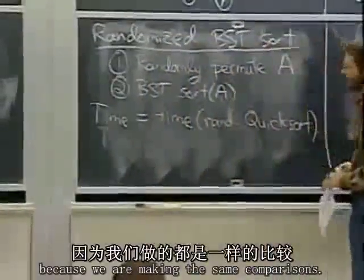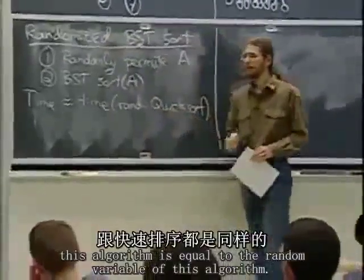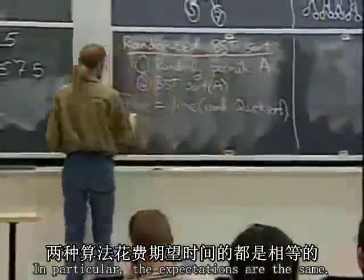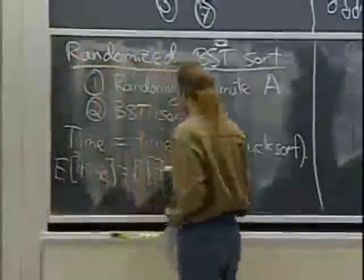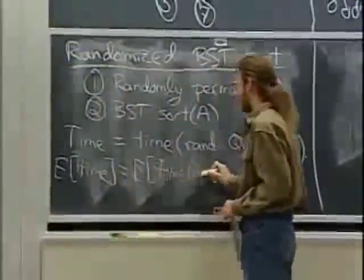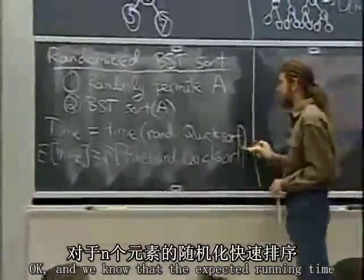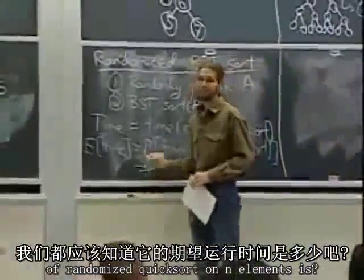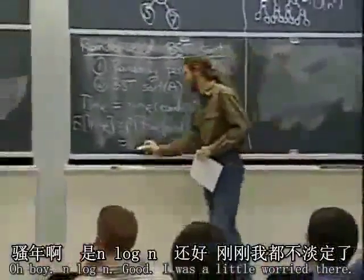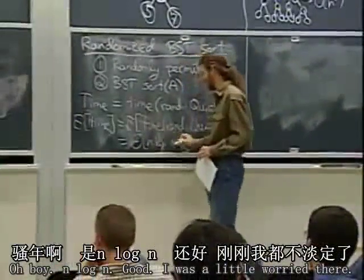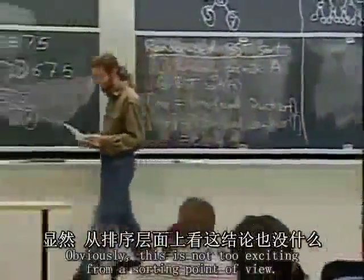The number of comparisons is equal, true as random variables, so in particular the expectations are the same. The expected running time of randomized quicksort on n elements is n log n. So the expected running time of BST sort is also n log n. Obviously this is not too exciting from a sorting point of view — the sorting was just to see the connection.